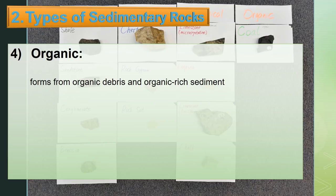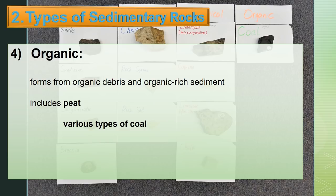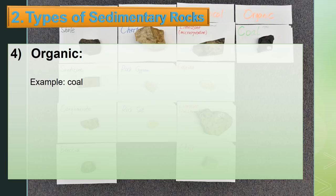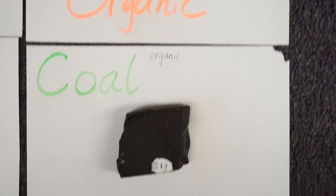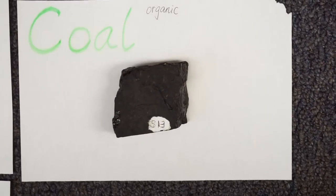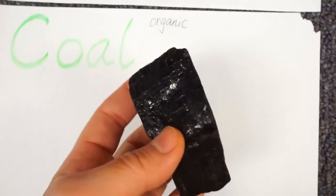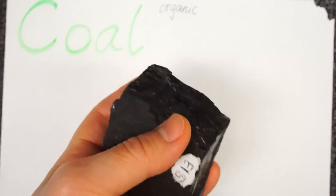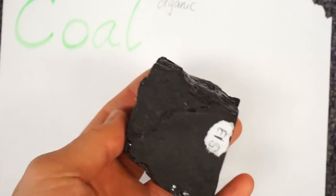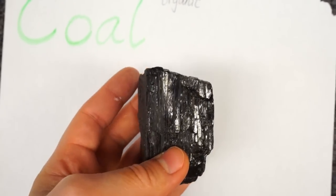The fourth type forms from organic debris and organic-rich sediment, including peat and various types of coal. An example is coal — a sample of coal is fine-grained organic matter, dark brown to black in color.